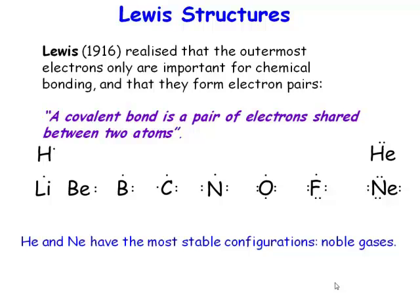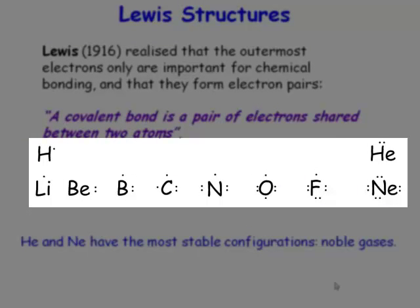If we look at the first and second periods of the periodic table, these are the number of valence electrons of each of these atoms.